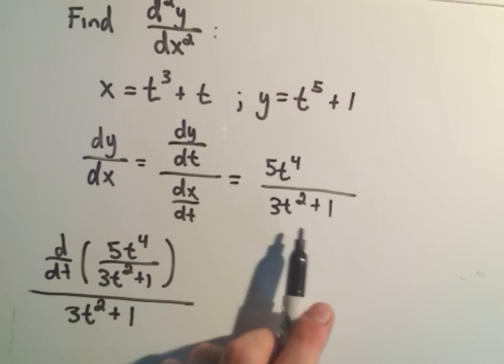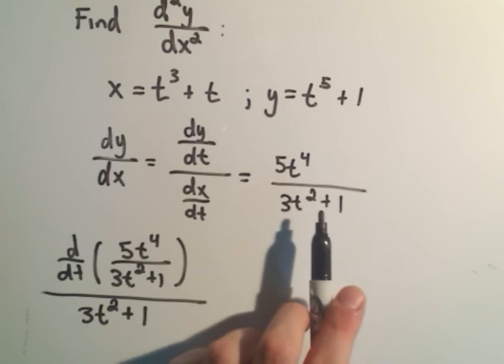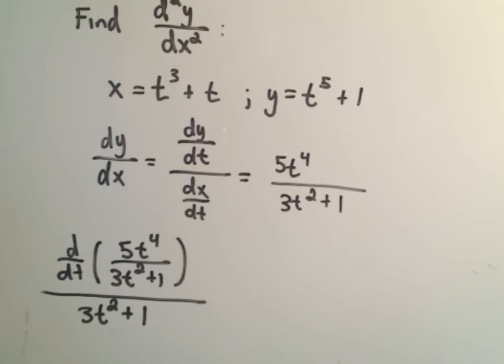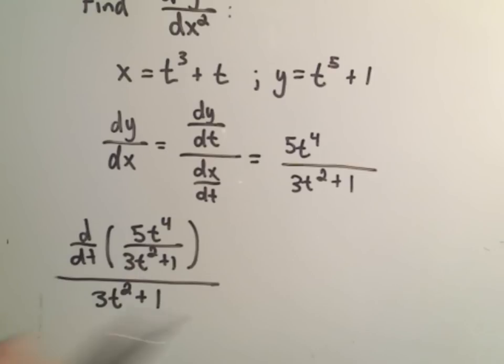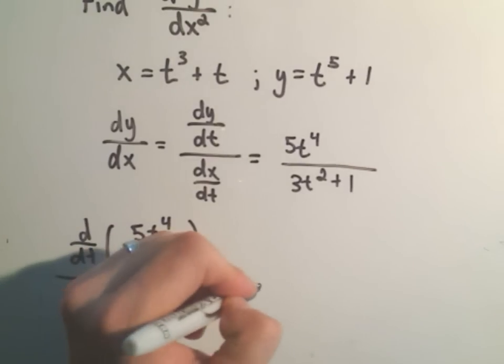So it's not like a normal second derivative. You don't take a derivative and then this thing you just take the derivative again. You do that, but that goes in the numerator and you have to divide by the original dx dt.